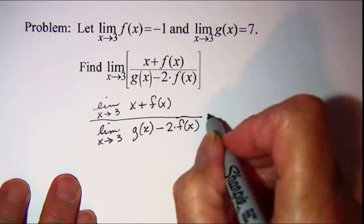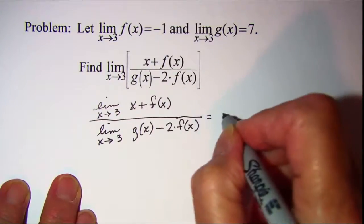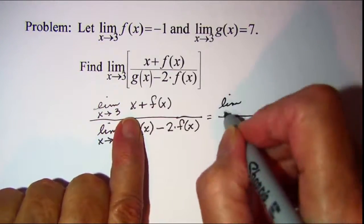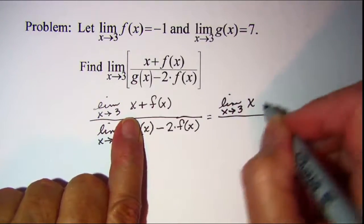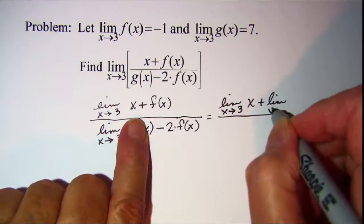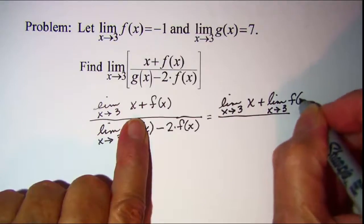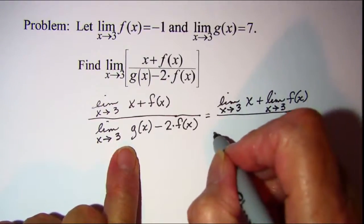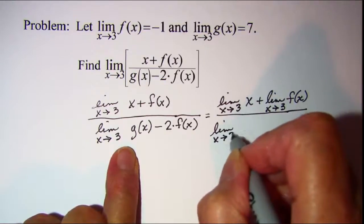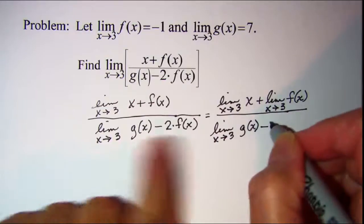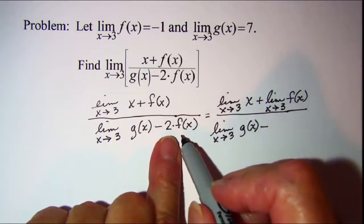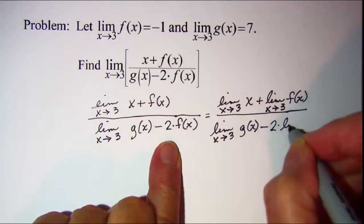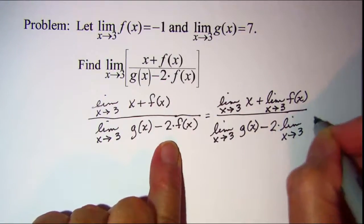Then we can use the first limit theorem to state that the numerator is the same as the limit as x approaches 3 of x, plus the limit as x approaches 3 of f of x. We'll do the same with the denominator: the limit as x approaches 3 of g of x, minus 2 times the limit as x approaches 3 of f of x, using the fourth theorem to bring the 2 out in front.